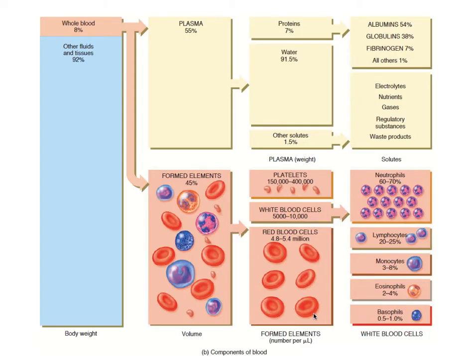This diagram shows what blood is composed of relative to total body weight and mass. Out of total body weight, 8% is blood. Blood is made of 55% plasma and 45% formed elements. Plasma is made up of proteins, water, and other solutes, while formed elements are composed of red blood cells, white blood cells, and platelets.